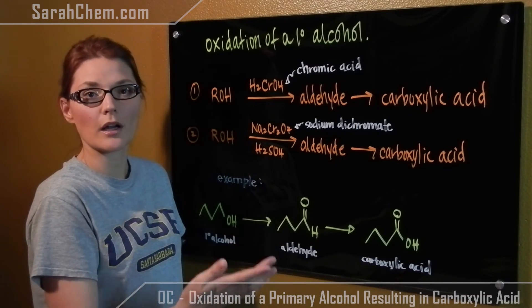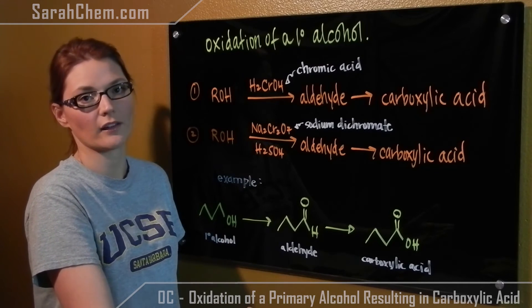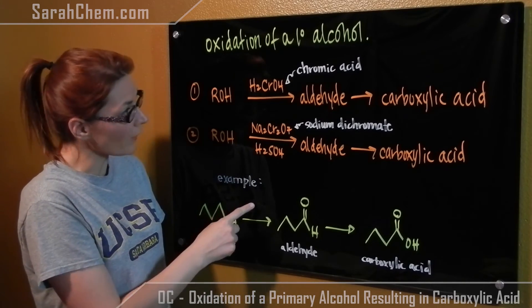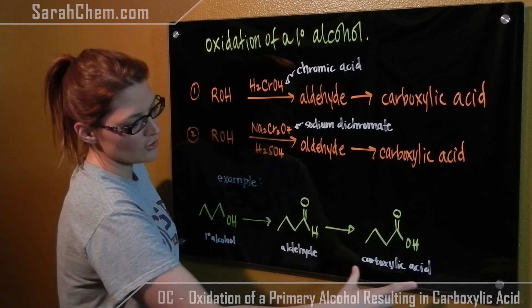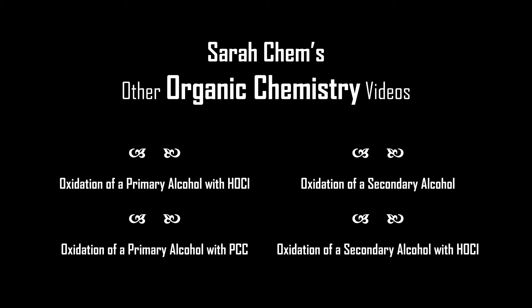So if you were to predict a product, you would predict the carboxylic acid, not the aldehyde. Over here, an example is your primary alcohol. One of these two reagents would be listed above this arrow here. You'd form your aldehyde and then a further oxidation to the carboxylic acid — so you'd be able to predict the carboxylic acid.